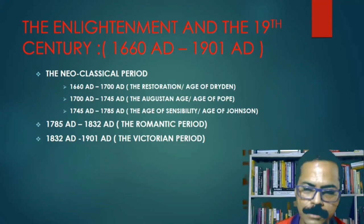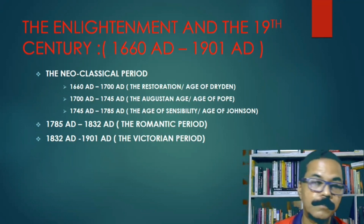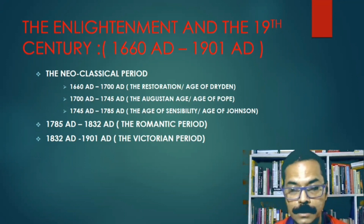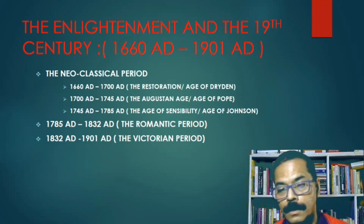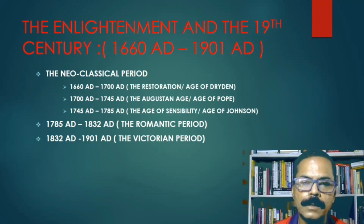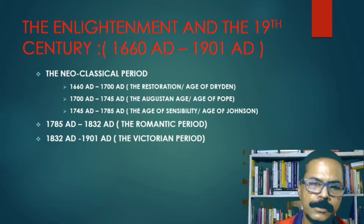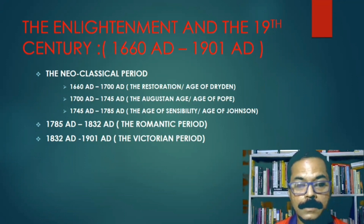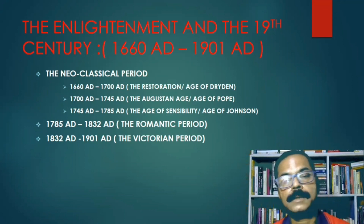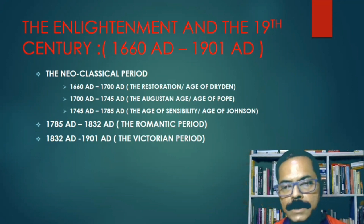1660 to 1700 is the Restoration — the restoration of monarchy after the Commonwealth period. This period is also called the age of Dryden, one of the greatest poets of that time. 1700 to 1745 is called the Augustan age, emulating the classical Augustan golden period, also called the age of Alexander Pope. 1745 to 1785 is the age of sensibility, or the age of Dr. Johnson.